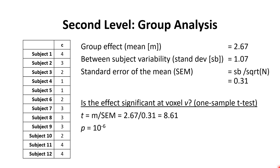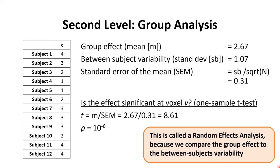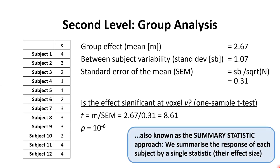It's worth mentioning that if we're doing this t-test in lots of voxels, we'd also have to correct for multiple comparisons, meaning the p-value threshold for detecting a significant effect would be much lower. This type of analysis is called a random effects analysis because we're comparing the group effect to the between-subjects variability. It's also sometimes called the summary statistic approach, because we summarize each subject with one single value — their effect size for the manipulation of interest, in this case visual stimulation versus rest. Overall this is known as the summary statistic implementation of random effects analysis.